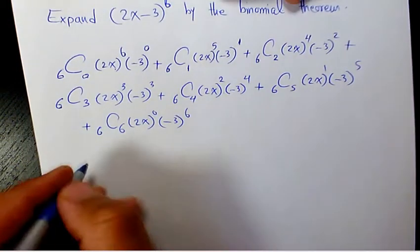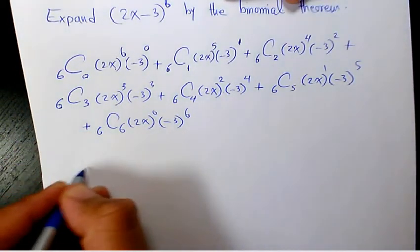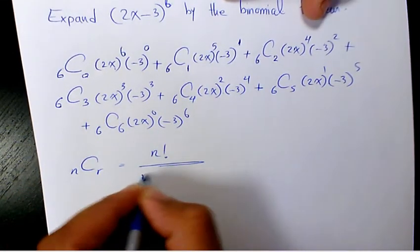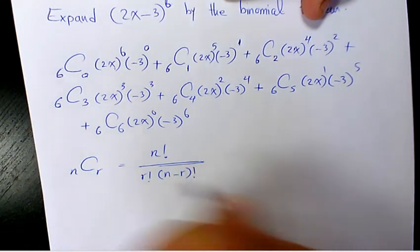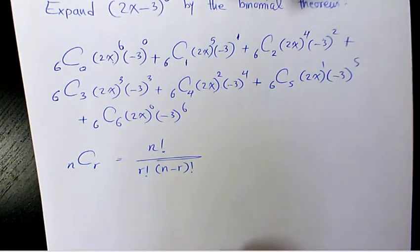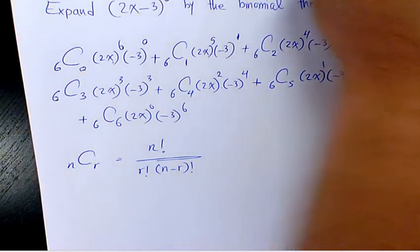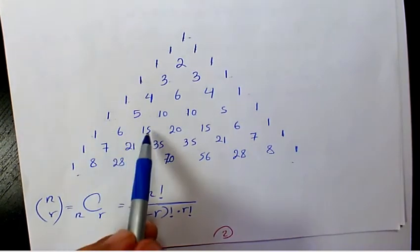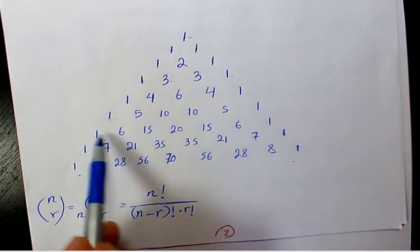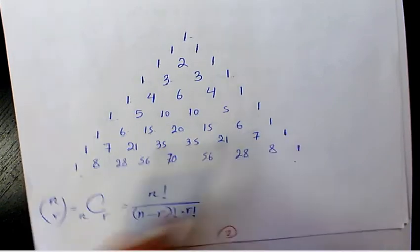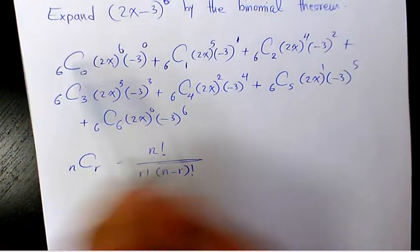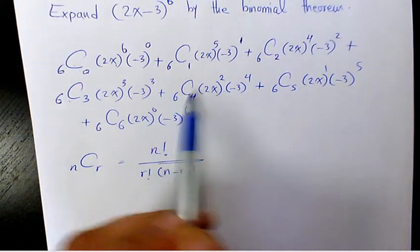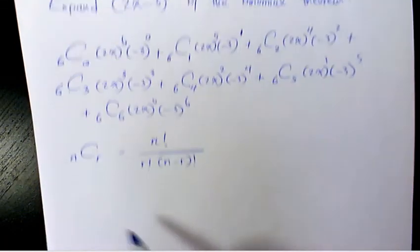To find nCr, that's going to be n factorial over r factorial times (n minus r) factorial. Or we can use Pascal's triangle, where the sixth row is going to be 1, 6, 15, 20, 15, 6, 1 — that's 7 values corresponding to the 7 terms.